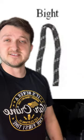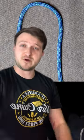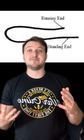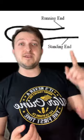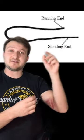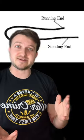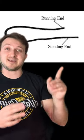First off, you need to know what a bight is. A bight is the bend of a rope where the ropes don't cross. From your bight, you have something called the running end and standing end. The running end is where you're actually going to work with your rope and make your knot, and the standing end you're going to leave alone.